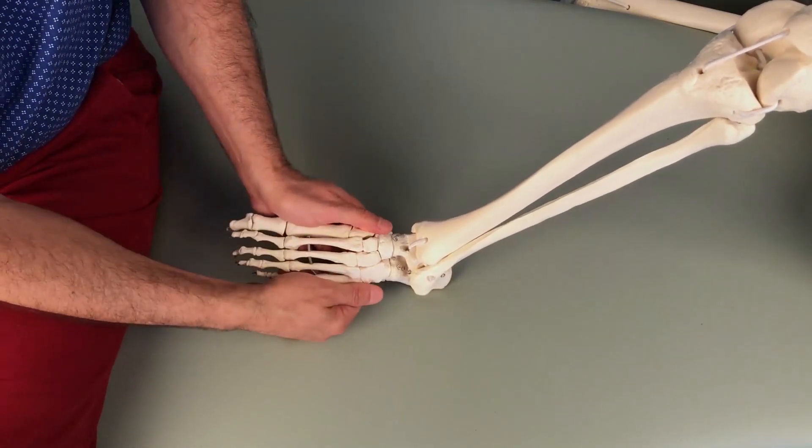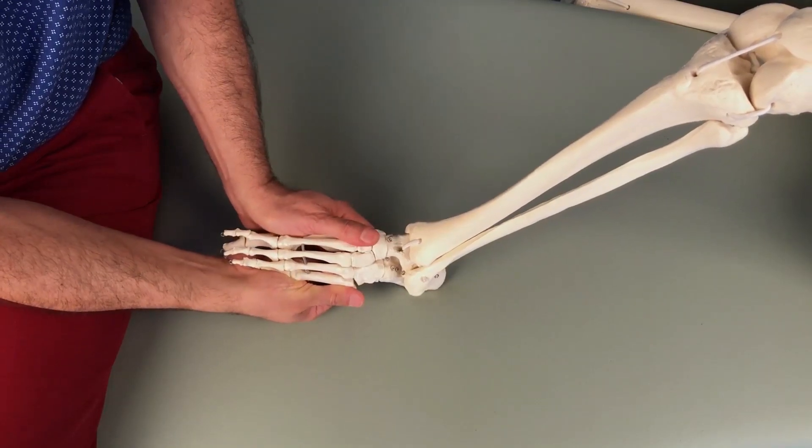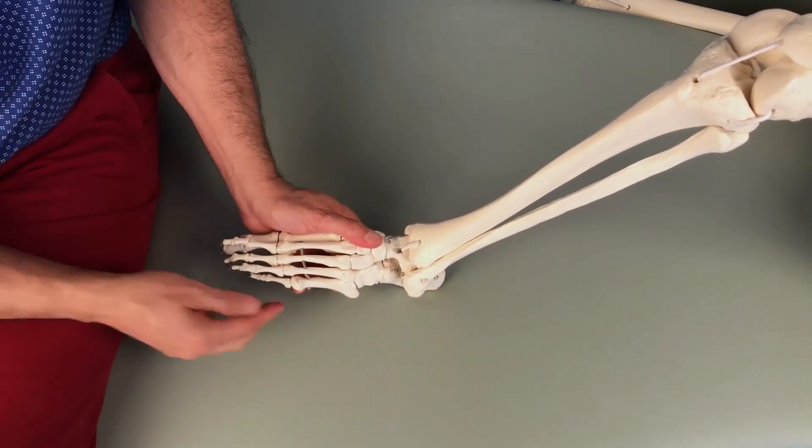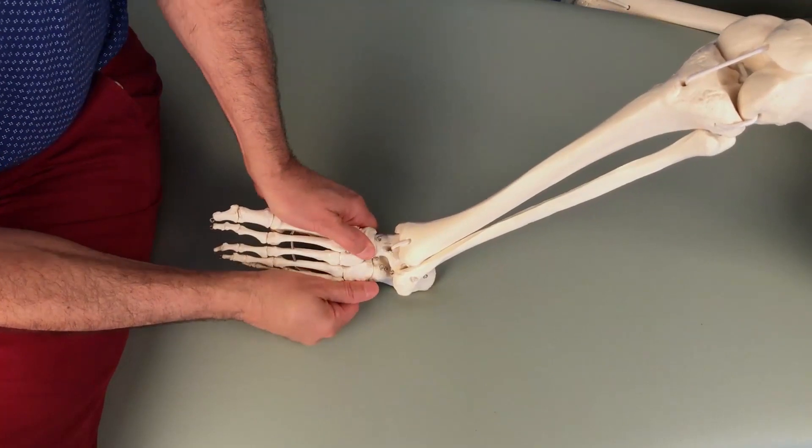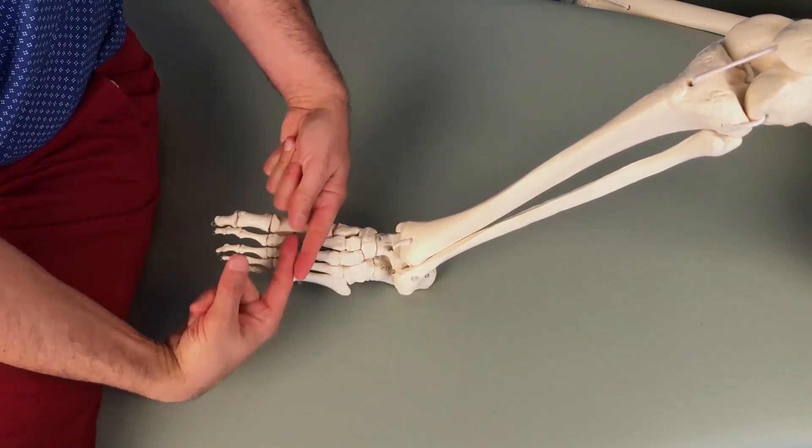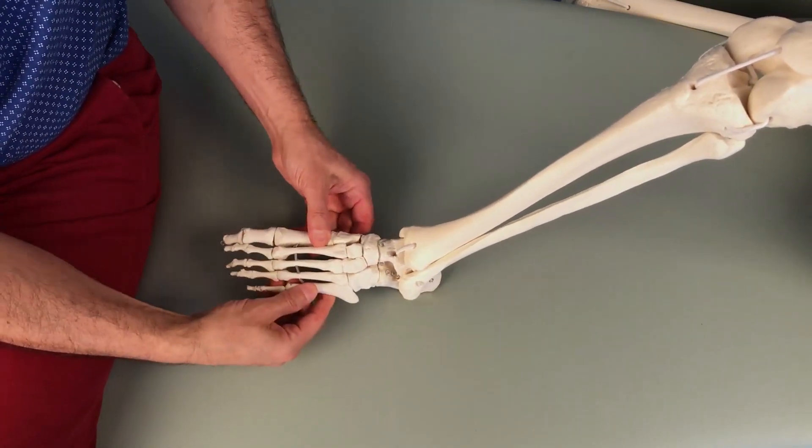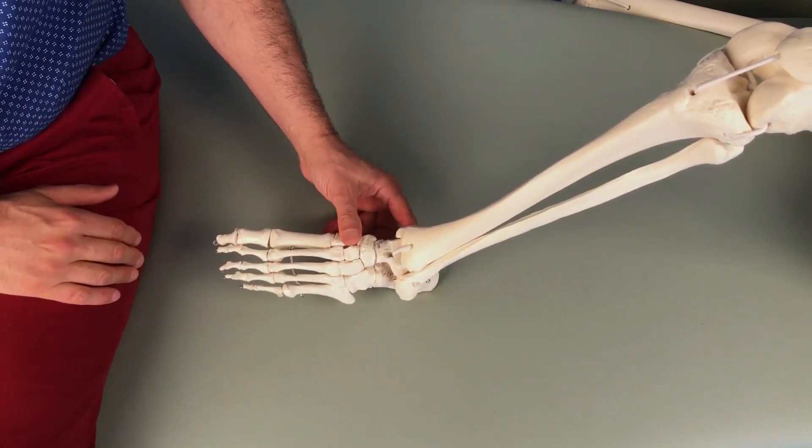When we do this, it's very important not to round the metatarsals around and increase the arch, but again to compress the metatarsals straight into each other. Morton's test for Morton's neuroma.